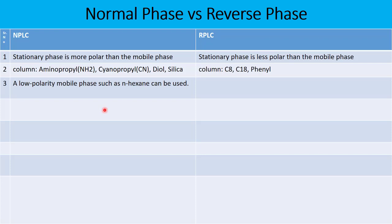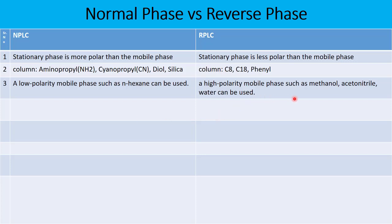A low polarity mobile phase such as hexane, dichloromethane, or ethyl acetate can be used — these are the non-polar mobile phases for normal phase. However, in case of reverse phase liquid chromatography, highly polar mobile phases such as methanol, ACN, and water can be used.